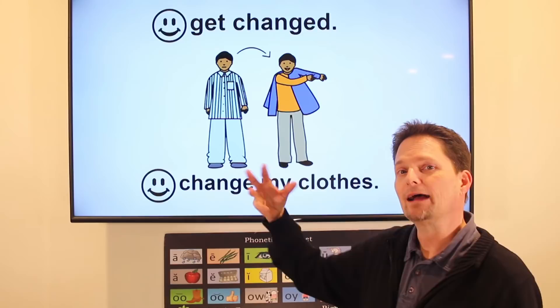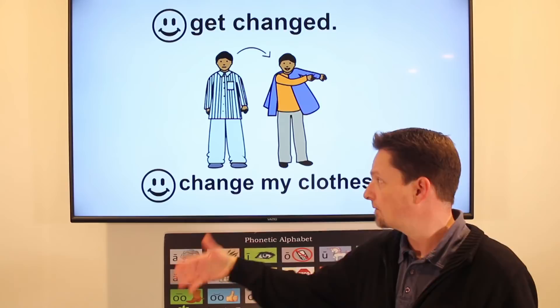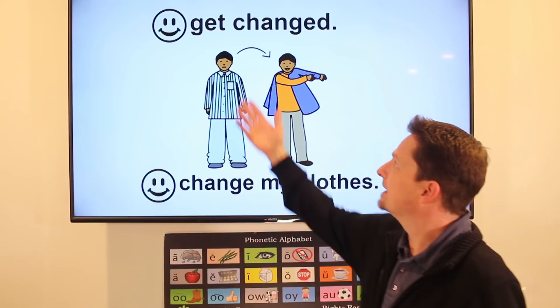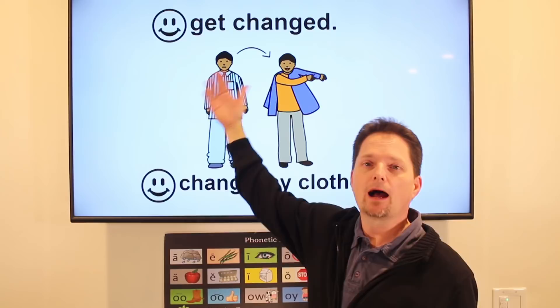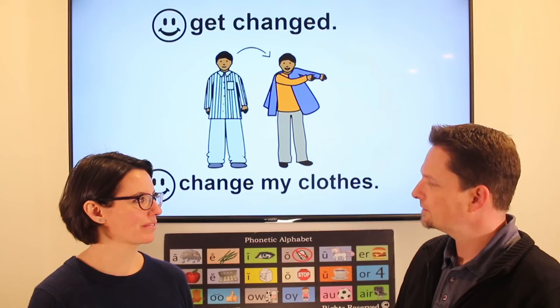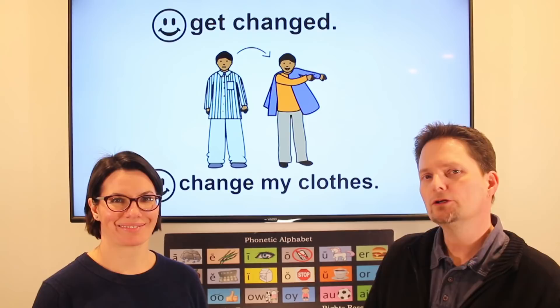When I come home, I change my clothes. I have different clothes for home and different clothes for going out. So when I come home, I change my clothes. Or you can use the expression 'get changed.' Remember, 'get' expresses a process and 'changed' is a description or adjective — so we say 'I get changed,' or 'I change my clothes.' Do you change your clothes when you get home? Yes, I change my clothes when I get home.